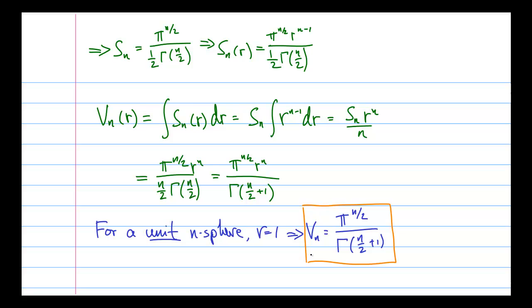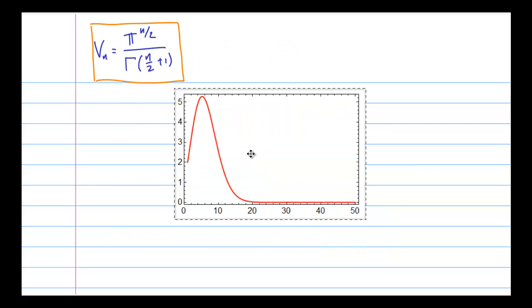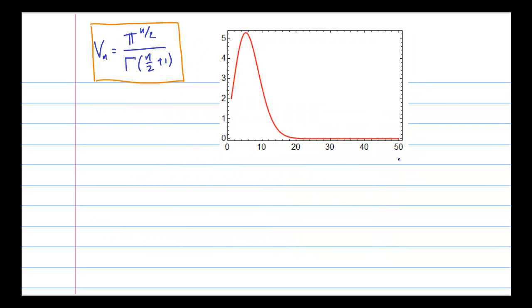So this is very interesting, because the gamma function grows very rapidly — it is kind of like a factorial. And so it turns out that when n is large, in fact when n is larger than about 20, then the volume of the unit n-sphere becomes approximately 0. So somewhat counterintuitively, as n becomes large, the volume of the unit n-sphere becomes very, very small. And in fact, it is maximum for n equals 5, and then it goes downhill from there.